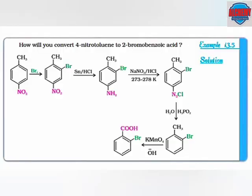In-text question: how will you convert 4-nitrotoluamine to 2-bromobenzoic acid? First, the 4-nitrotoluamine undergoes bromination. The resulting product then undergoes reduction in the presence of tin and HCl, and the NO2 part is replaced by NH2, i.e., amine. The resulting compound reacts with sodium nitrate and hydrochloric acid to form the diazonium chloride. The diazonium chloride in the presence of hypophosphorous acid (H3PO2) and water removes the N2+Cl- group. The 2-bromobenzene then undergoes oxidation in the presence of KMnO4 to form 2-bromobenzoic acid.